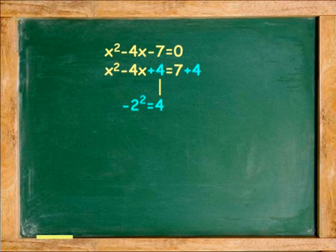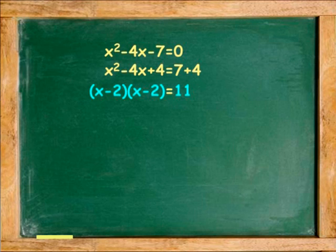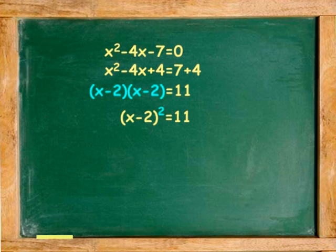Step 3: Factor the left-hand side of the equation as a perfect trinomial square. x minus 2 times x minus 2 equals 11. Since these two factors are the same, we square them: x minus 2 squared equals 11.